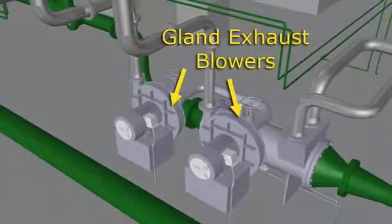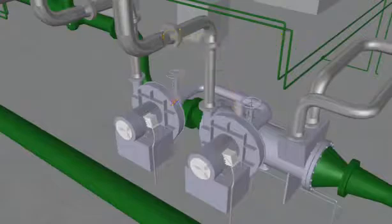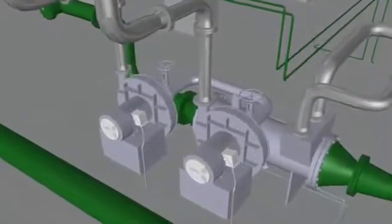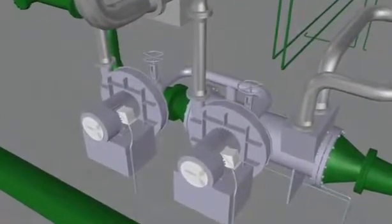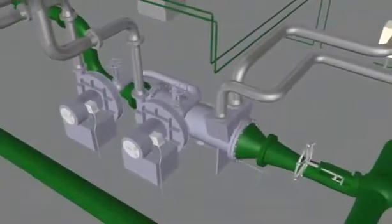Gland steam exhaust blowers are used to help pull the gland steam into the gland condenser and to exhaust any non-condensable gases that may be entrained in the gland exhaust steam.